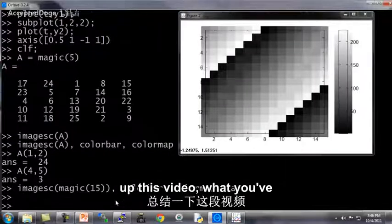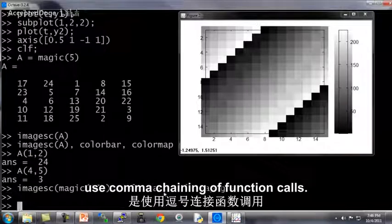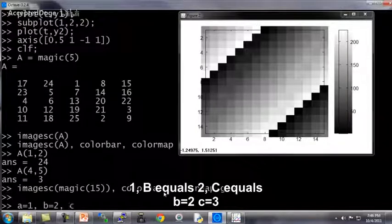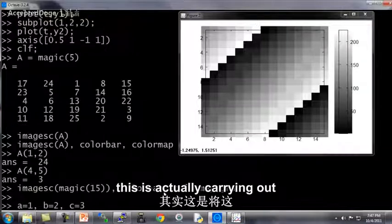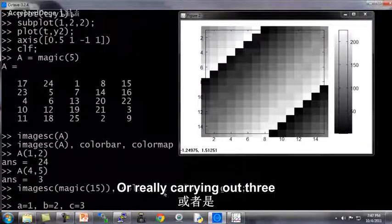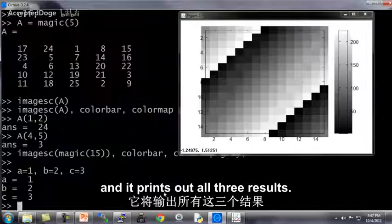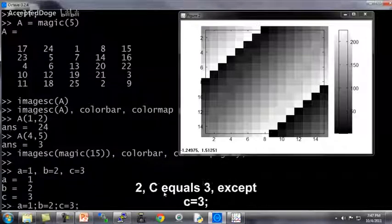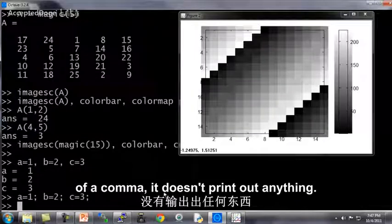And finally, to wrap up this video, what you've seen me do here is use a comma chaining of function calls. Here's how you actually do this. If I type A equals 1, B equals 2, C equals 3, and hit enter, then this is actually carrying out three commands at the same time, or really carrying out three commands one after another. And it prints out all three results. And this is a lot like A equals 1, B equals 2, C equals 3.